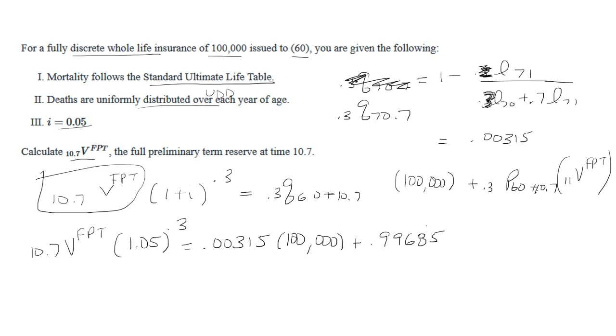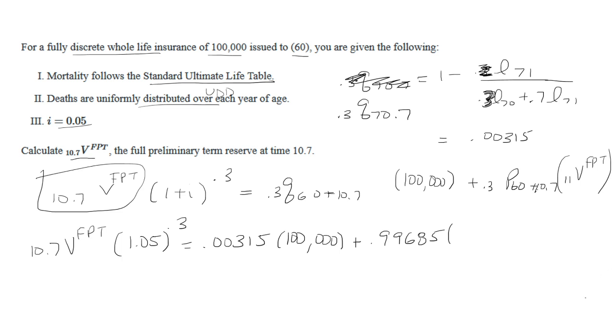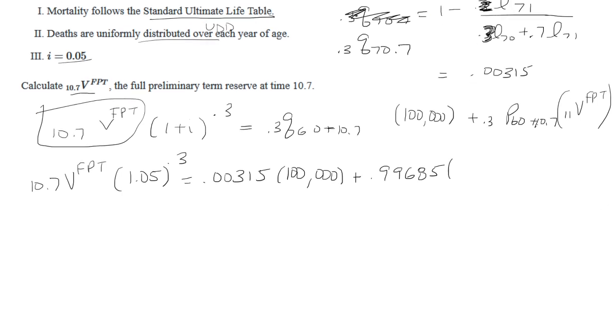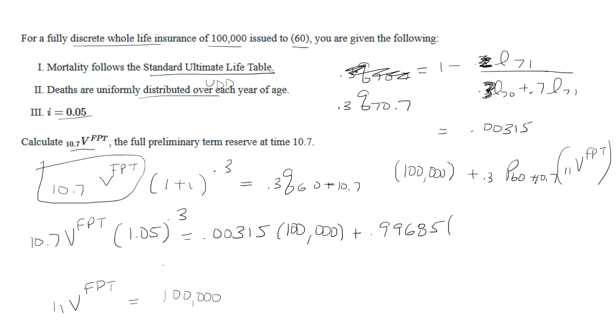Then we want to multiply that by the full preliminary reserve at time 11. We'll do this one on the side here. The benefit is $100,000. This was issued at age 60, so we had 11 more years to that, so that becomes 71 minus we want the premium.